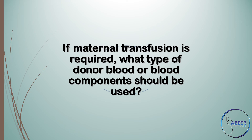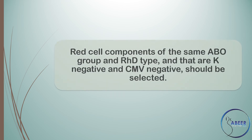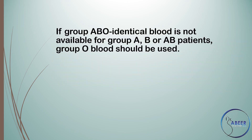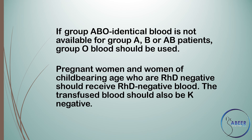If maternal transfusion is required, what type of donor blood or blood components should be used? Red cell components of the same ABO group and RhD type, that are K-negative and CMV-negative, should be selected. If group ABO identical blood is not available for group A, B, or AB patients, group O blood should be used. Pregnant women and women of childbearing age who are RhD negative should receive RhD-negative blood, and the transfused blood should also be K-negative.